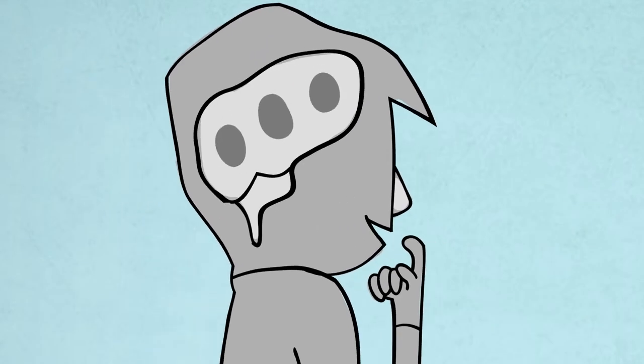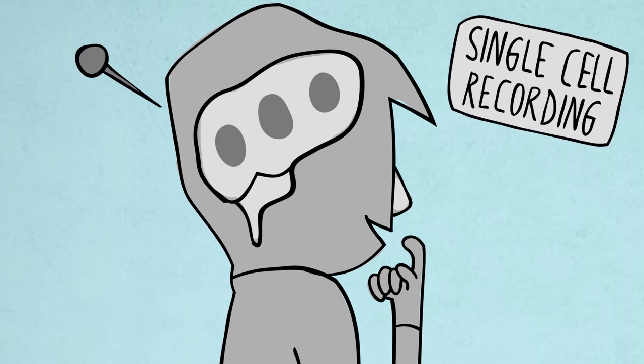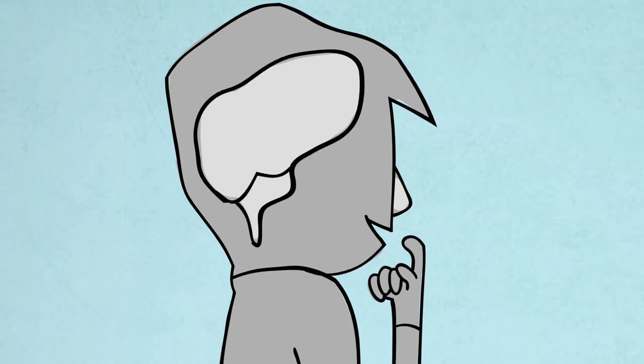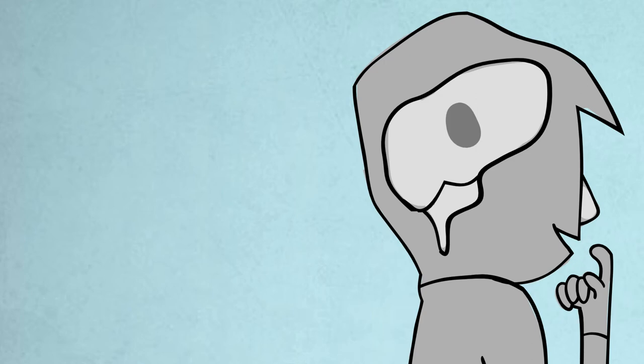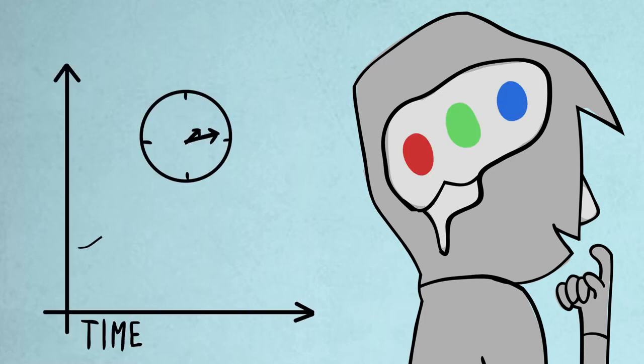But traditionally, this brain signal was either studied using single cell recording, which could only target one area at a time, or using fMRI, which is a core brain imaging technique showing where the brain is active, but without showing precisely when this activity occurs.